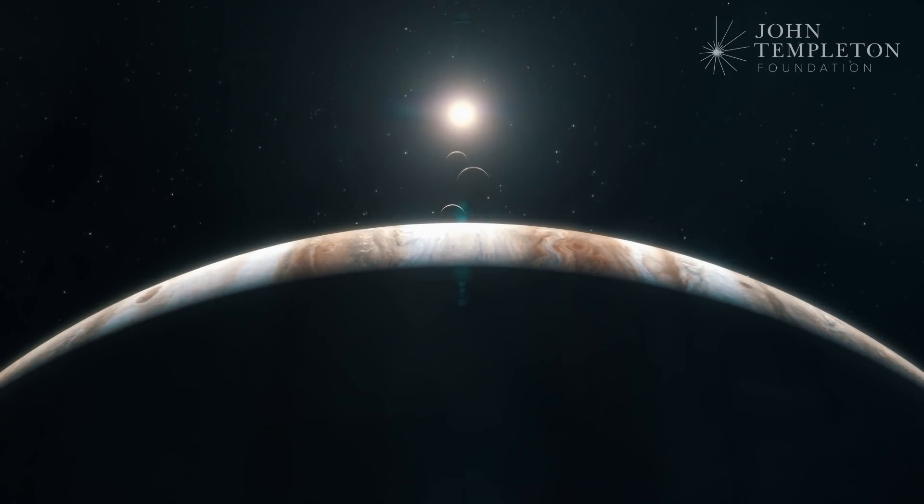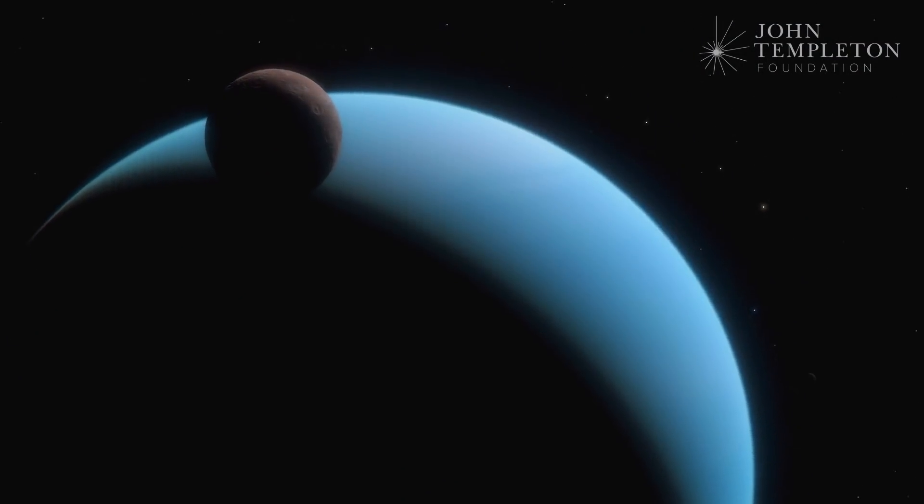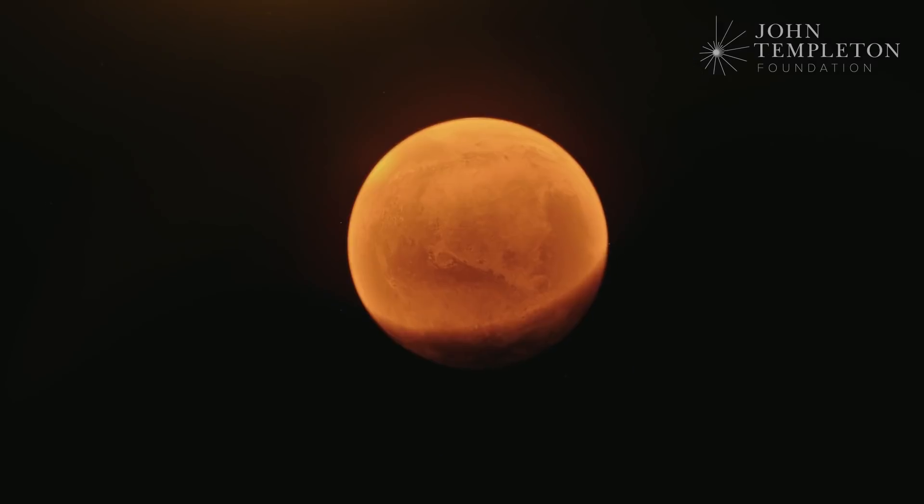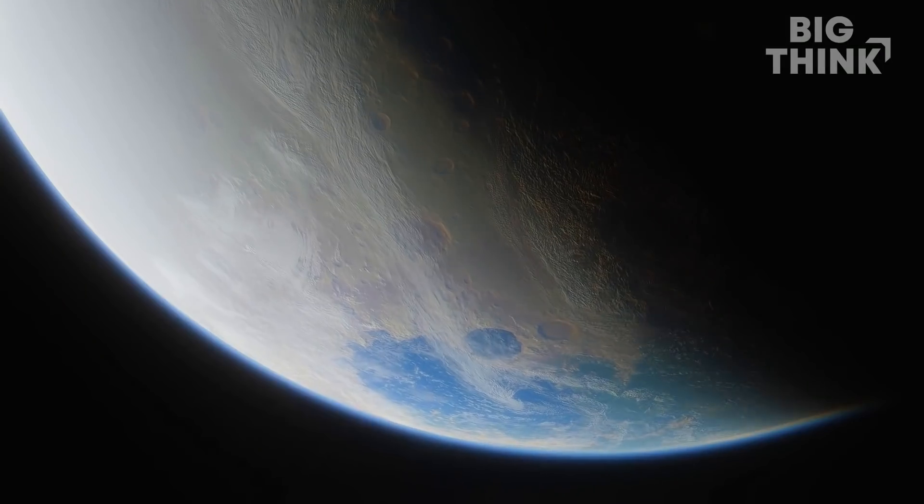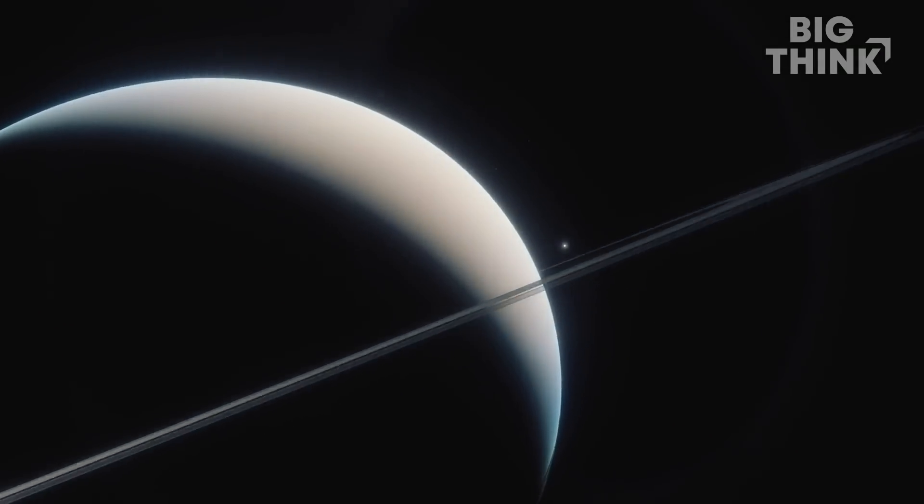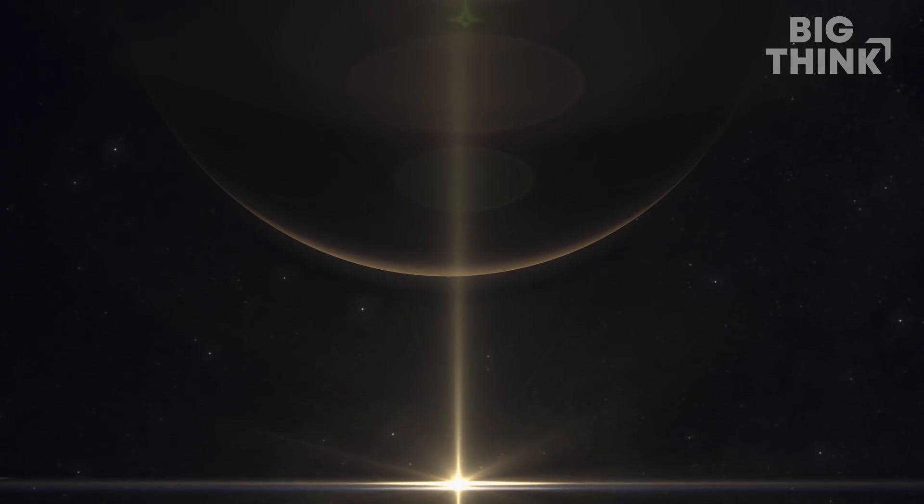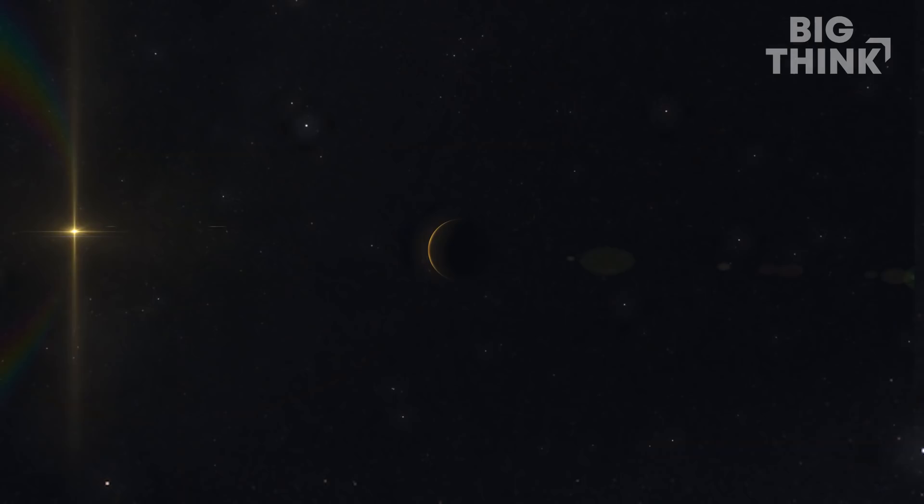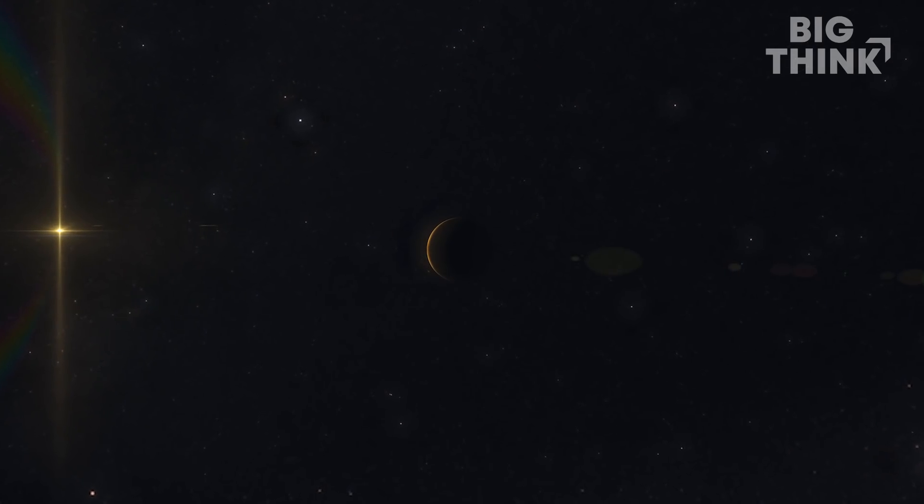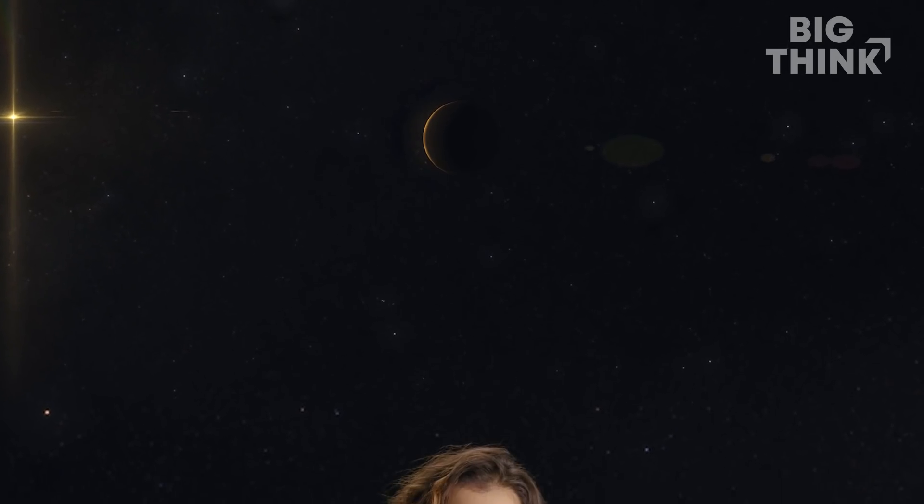It's possible that our sample set will soon double as we explore our solar system. We could find evidence of life on Mars, Europa, Enceladus. And there was recently some indication of phosphenes, potential biomarkers in the atmosphere of Venus. Some of these places are hostile to life as we know it, but they might be extremely welcoming to life as we don't yet know it.